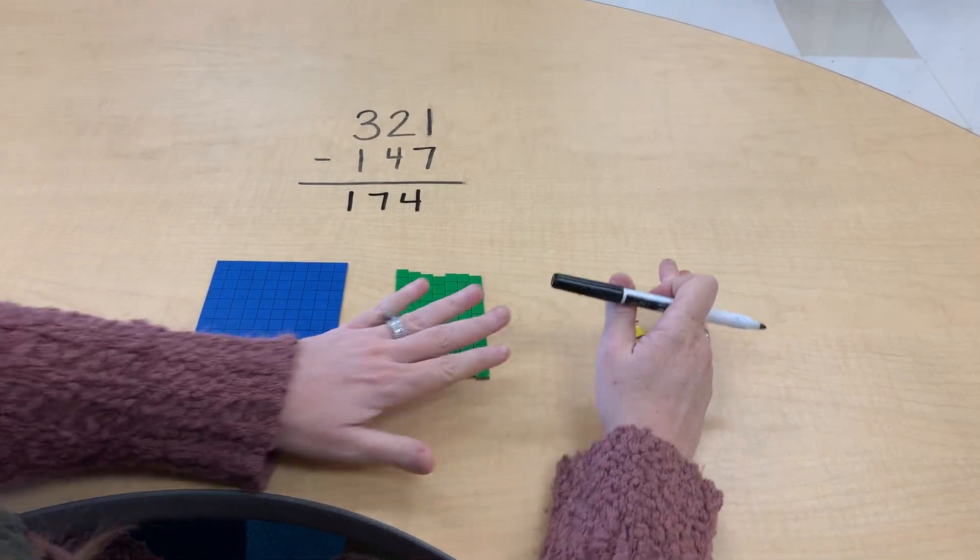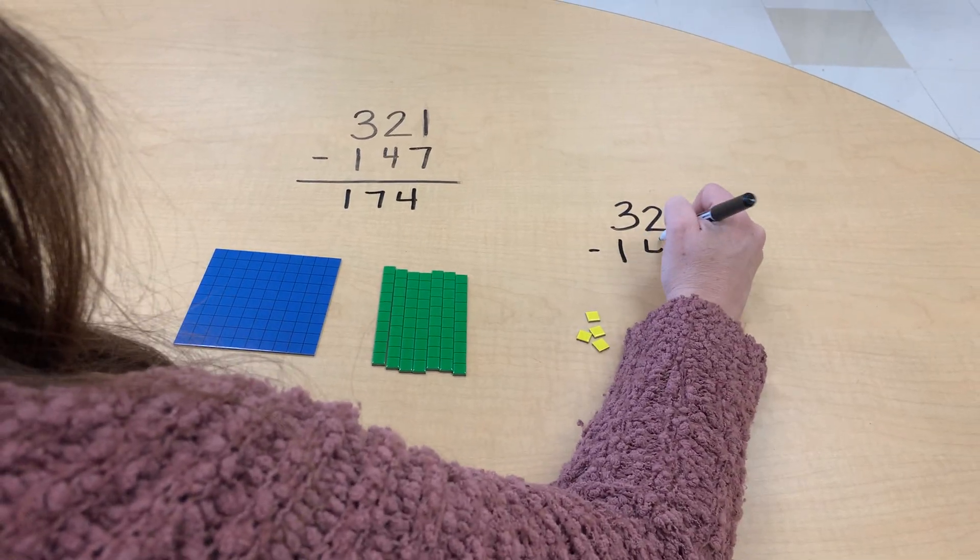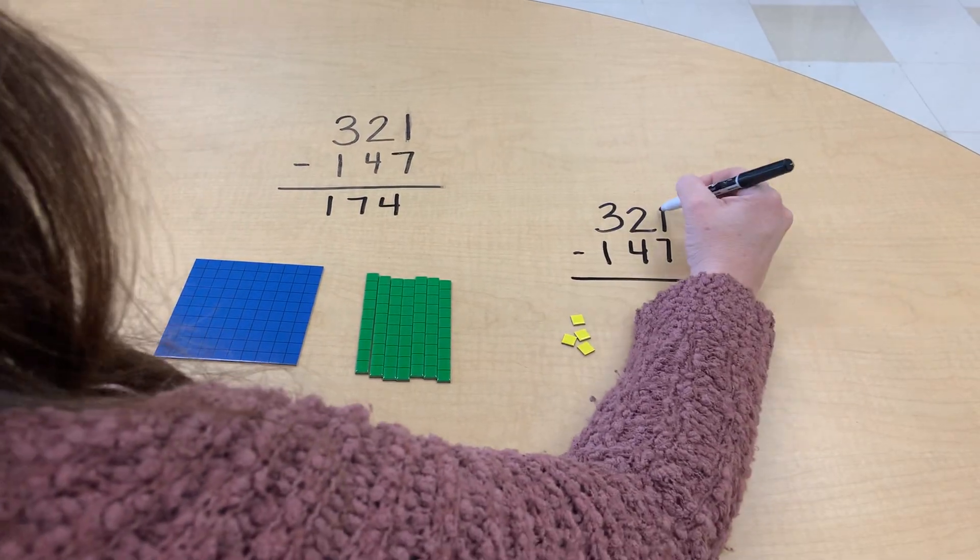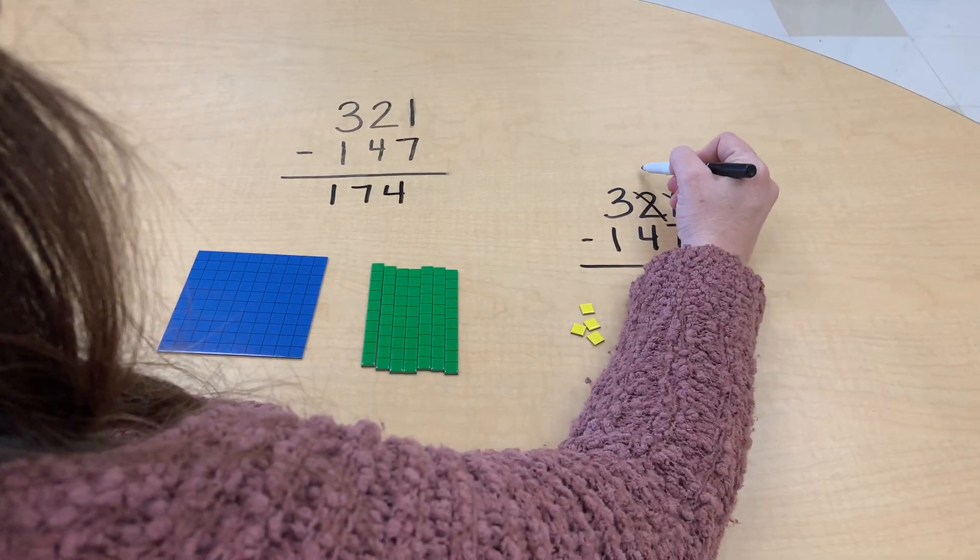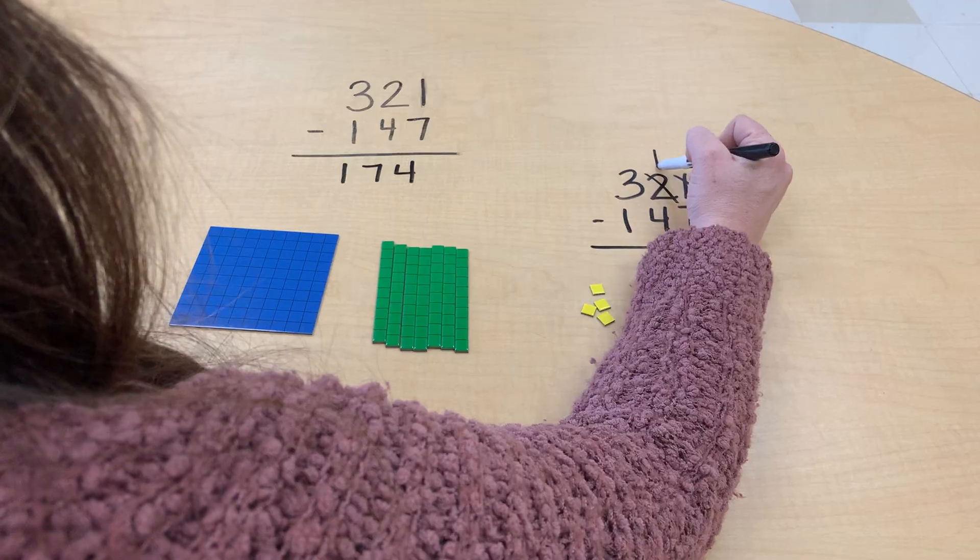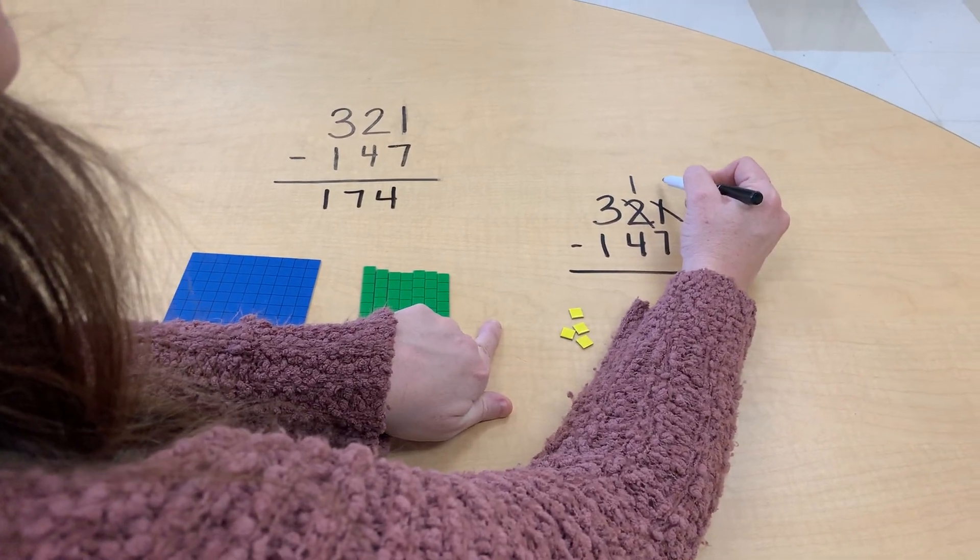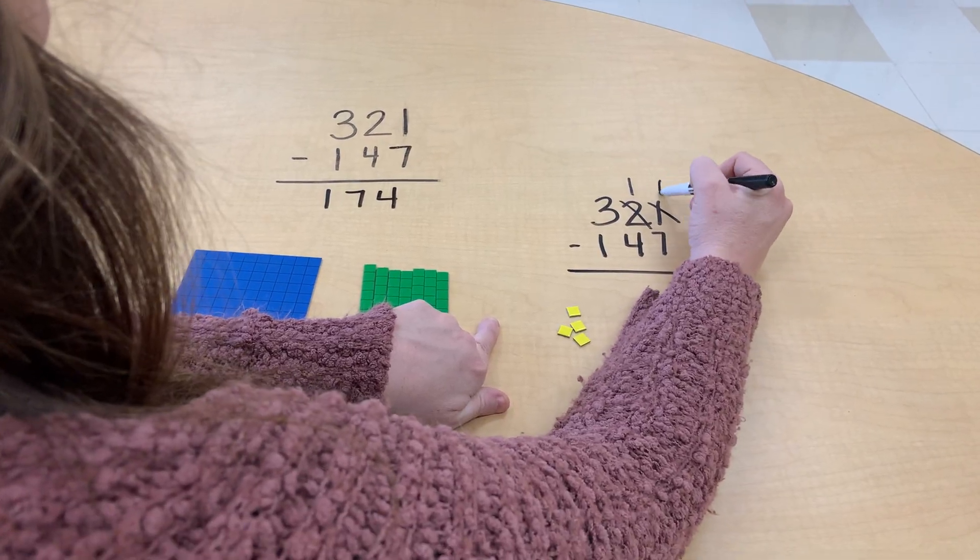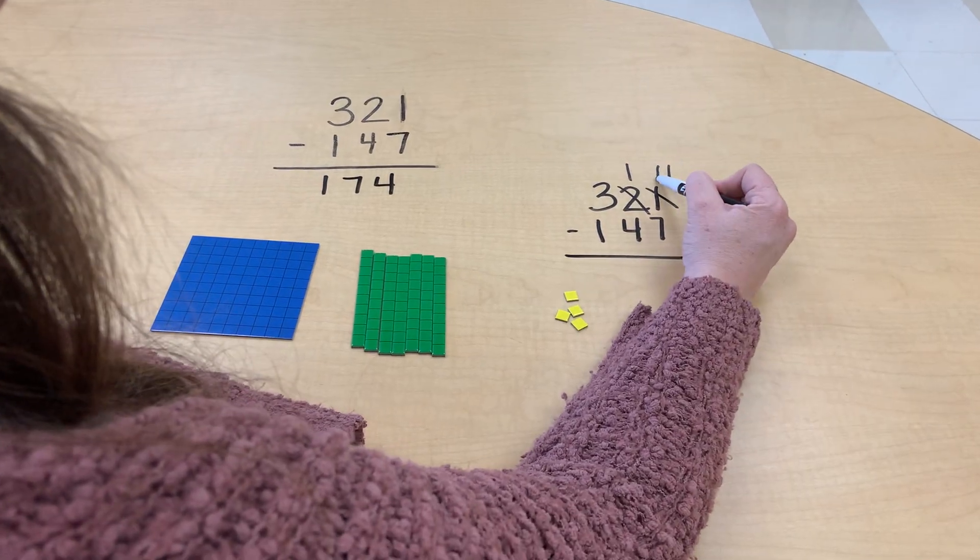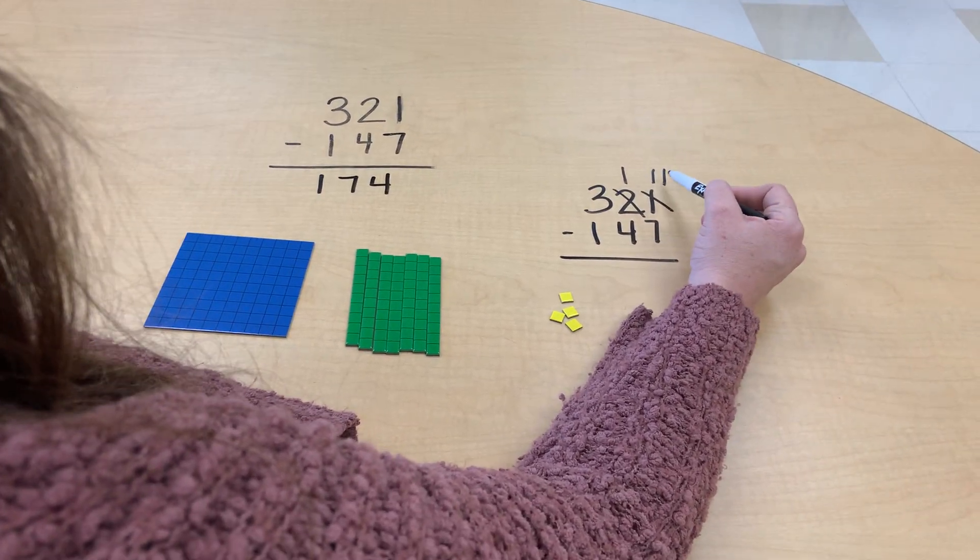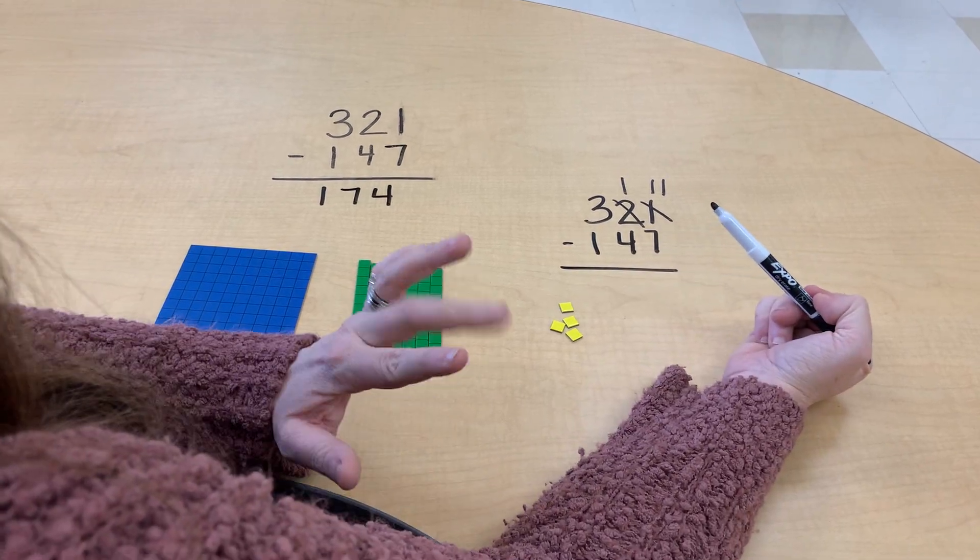And if we were to solve that the standard algorithm way, three hundred twenty-one minus one hundred forty-seven. I cannot take seven from one, so I'm regrouping from the tens, just like I did earlier with my manipulatives. It left me with one ten, and I'm going to break that up into now eleven ones. I moved a ten over, and I had one one already, so that's eleven. Eleven minus seven is four.